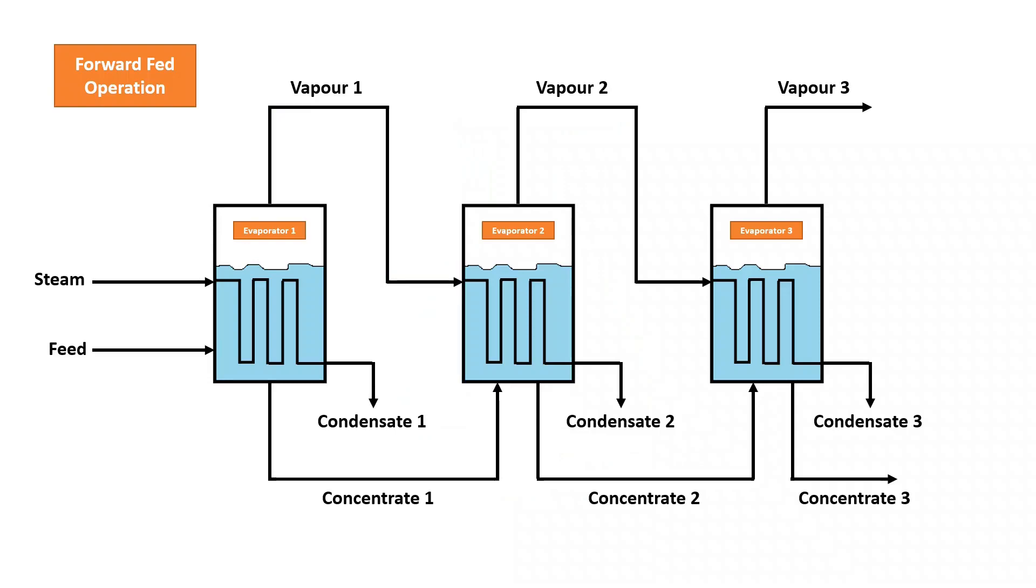As the solution in evaporator 2 gets heated, some of the solvent in the solution vaporizes to form more vapor which is then passed onto the next evaporator, in this case evaporator 3, and the whole process repeats itself.